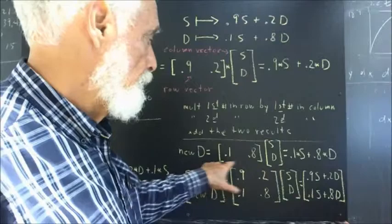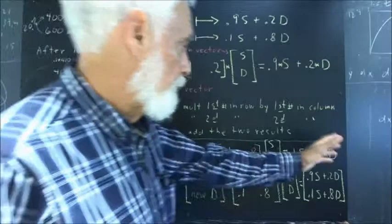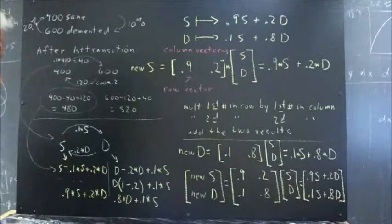So the new D is 0.1 times S first times first. That's 0.1 times S plus second times second 0.8 times D. And that gives us the result that we know we need for the number of demented.